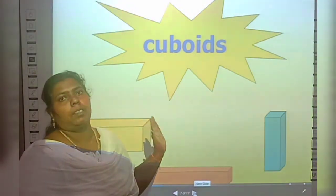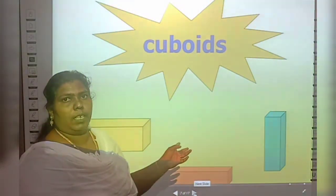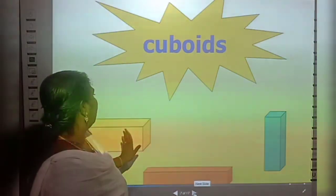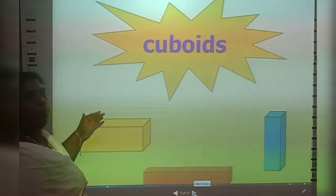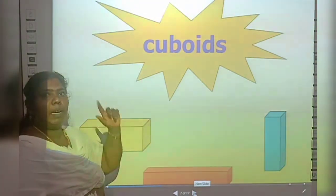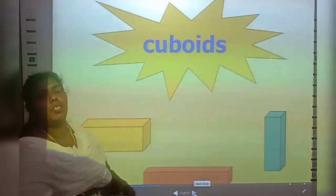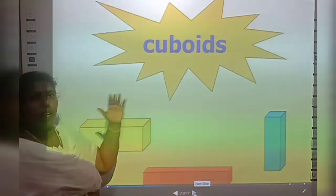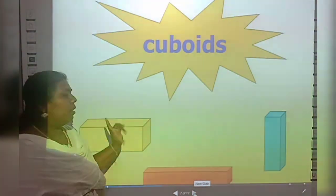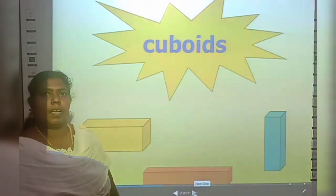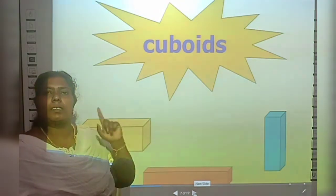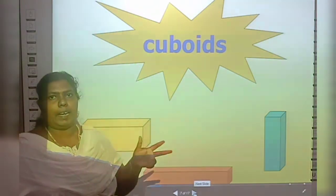Next is cuboid. Cuboid also has 8 vertices, 12 edges, and 6 faces. But the difference is that the cube's flat faces are square-shaped, while the cuboid's flat faces are rectangle-shaped.